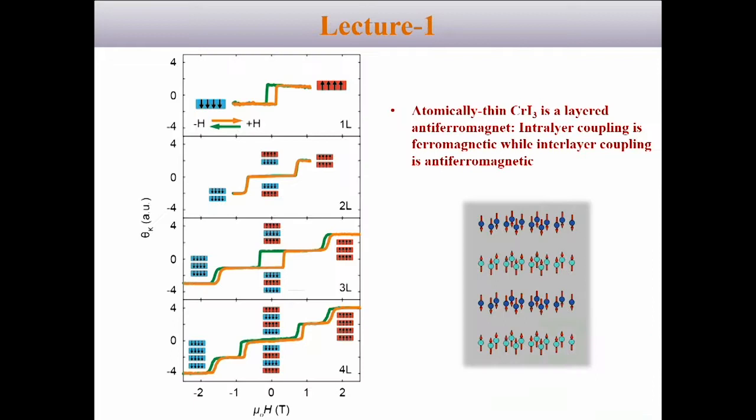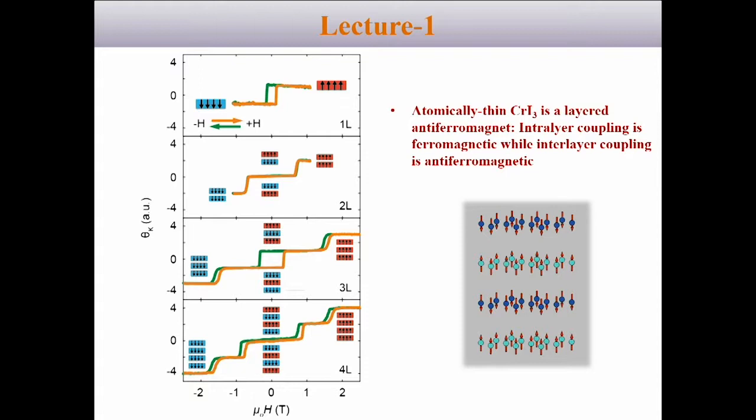So here's just a quick recap. In the morning, we talked about chromium triiodide. It's a layered antiferromagnetic insulator, which means for an individual monolayer it's ferromagnetic, and the interlayer coupling is antiferromagnetic. This gives rise to spin-flip transitions as we sweep the magnetic field.